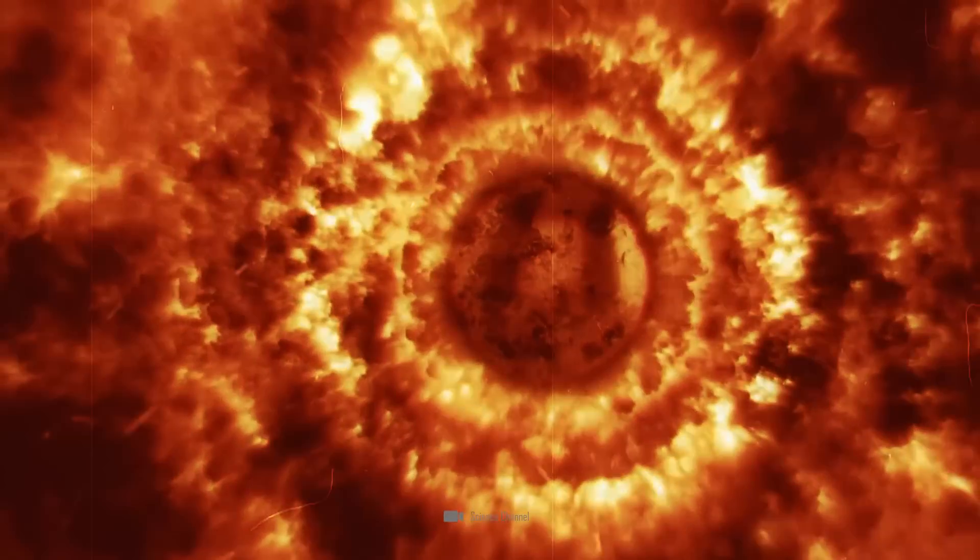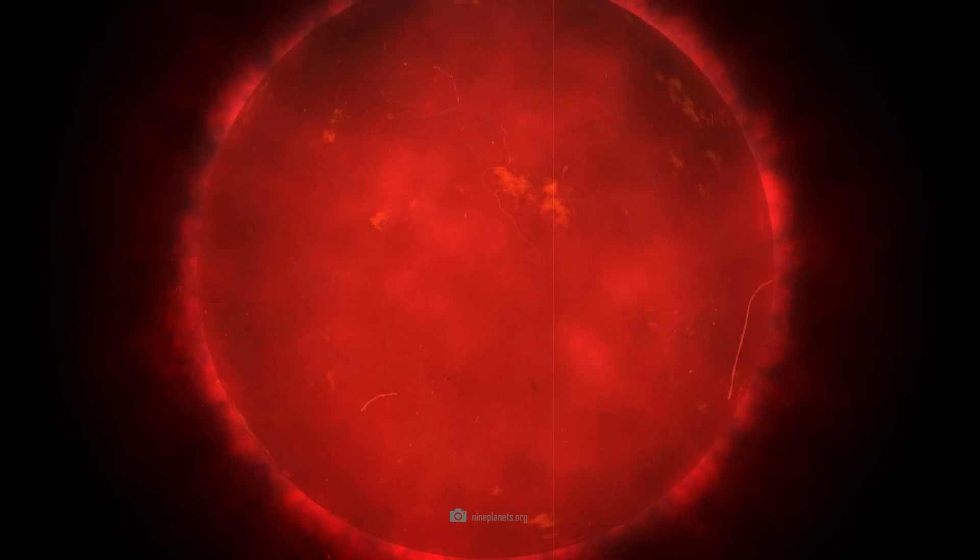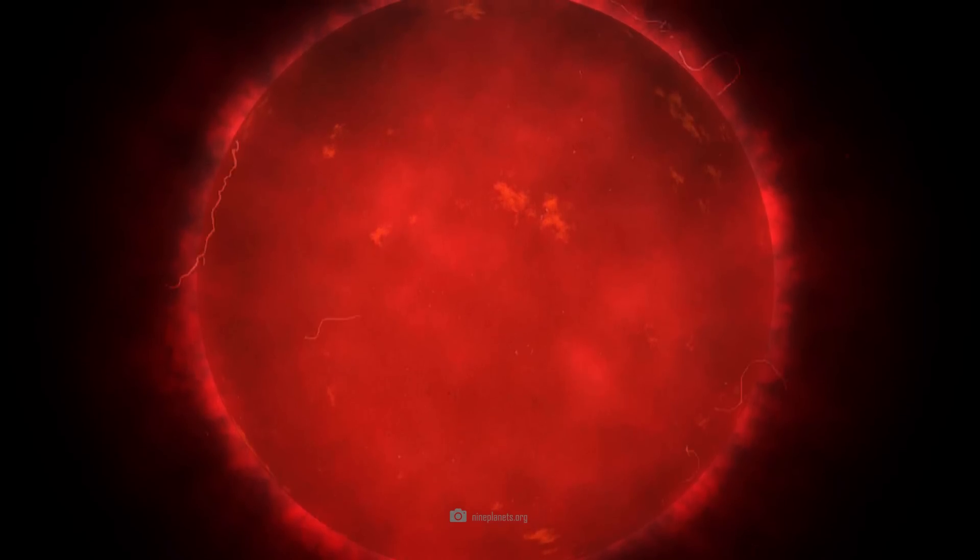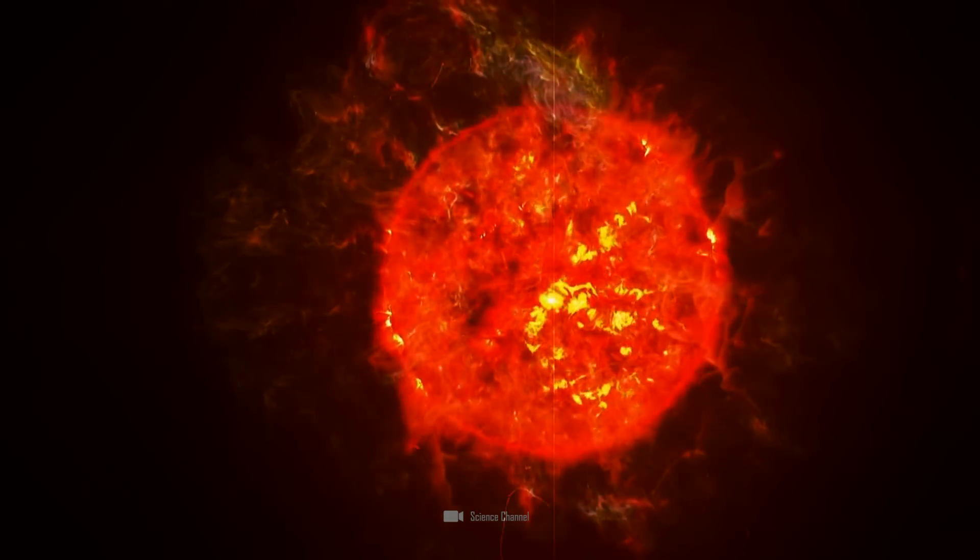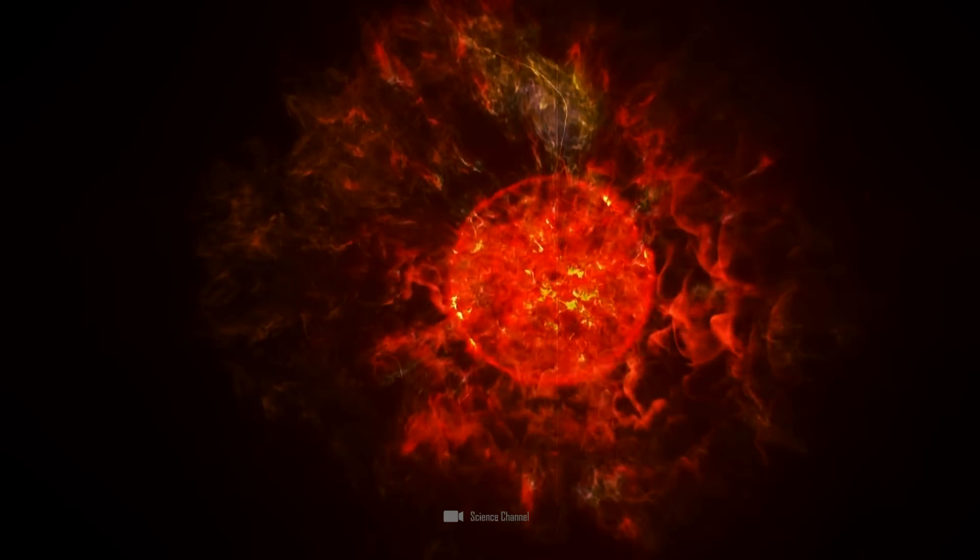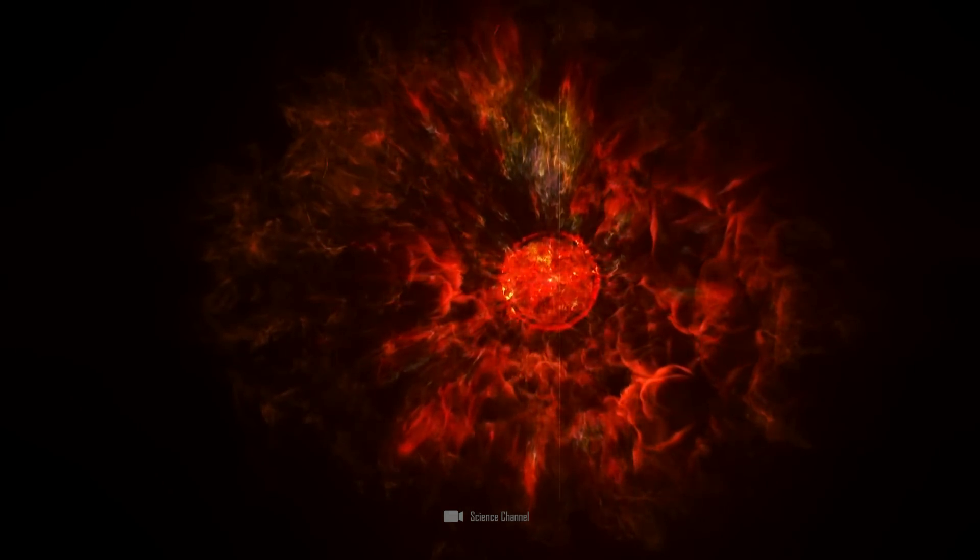Helium fused in the center to form carbon and oxygen, while hydrogen was still fusing in the outer layers. The fusion of heavier elements slowly releases less and less energy, and the core will eventually collapse.